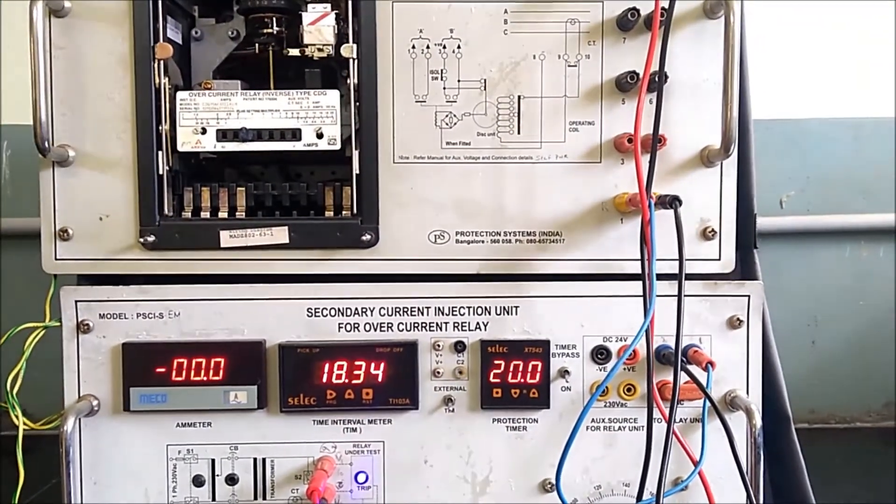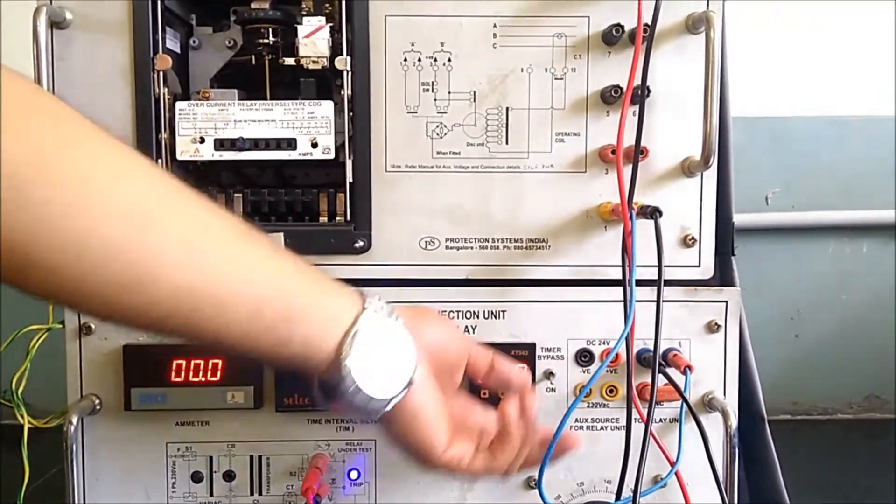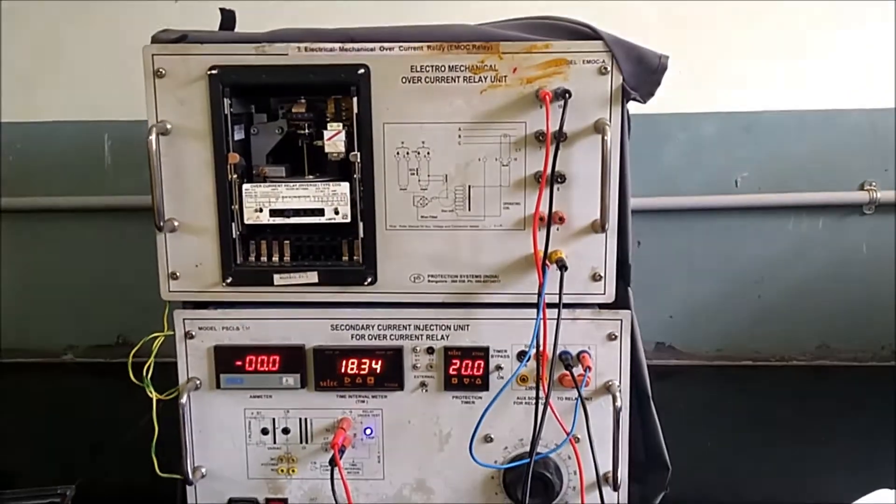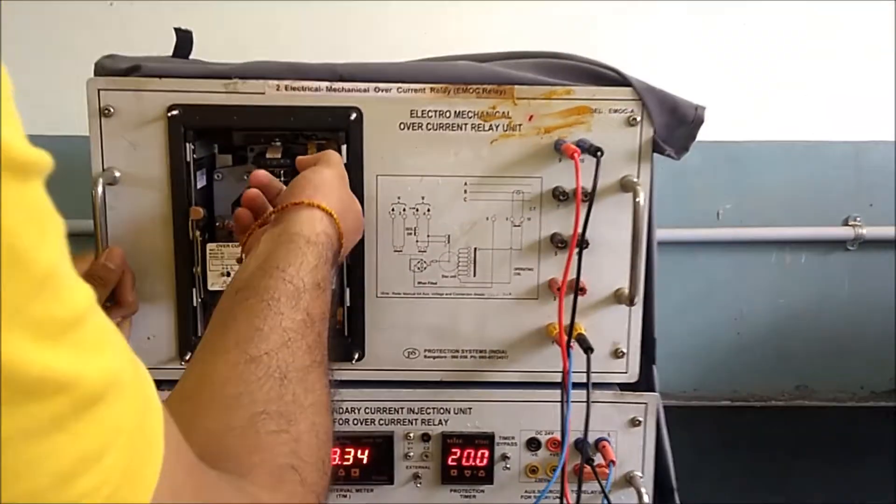Now relay has tripped at 18.34 seconds for the plug setting of 1, time multiplier setting 1. Let us reset the flag, reset the testing module.